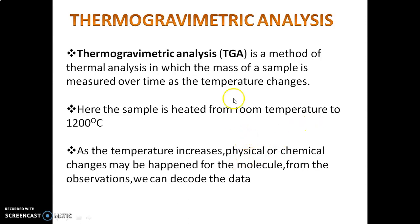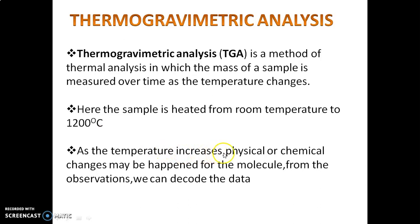According to the definition, thermogravimetric analysis is a method in thermal analysis in which the mass of the sample is measured over time as the temperature changes. Normally, the sample is heated from room temperature to 1200 degrees Celsius. As the temperature increases, physical or chemical changes may occur.